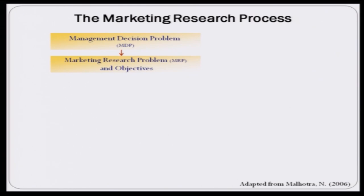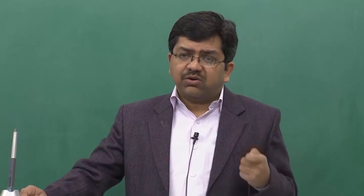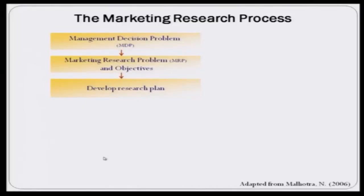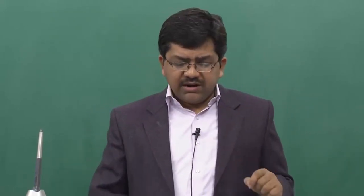Once you have defined your marketing research problem, you can come out with specific research objectives — what needs to be researched or what kind of information is required. Then, once you have defined your research objectives, you have to come out with your plan: how you are going to address or fulfill those research objectives. Inside that you have to decide different issues like whom to collect data from and how it is to be collected.